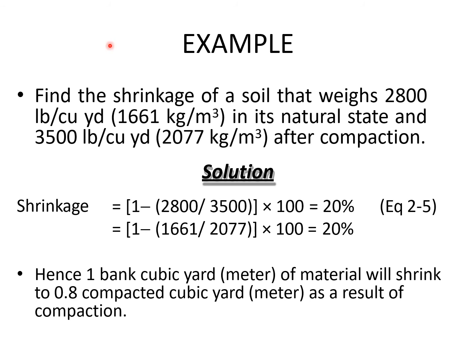Here is another solved example: find the shrinkage of a soil that weighs 2,800 pounds per cubic yard (1,661 kg/m³) in its natural state and 3,500 pounds per cubic yard (2,077 kg/m³) after compaction. Simply by using the shrinkage formula and plugging in the values, the answer is 20%. From that you can conclude that 1 cubic yard or 1 cubic meter of material will shrink to 0.8 compacted cubic yards or meters as a result of compaction.